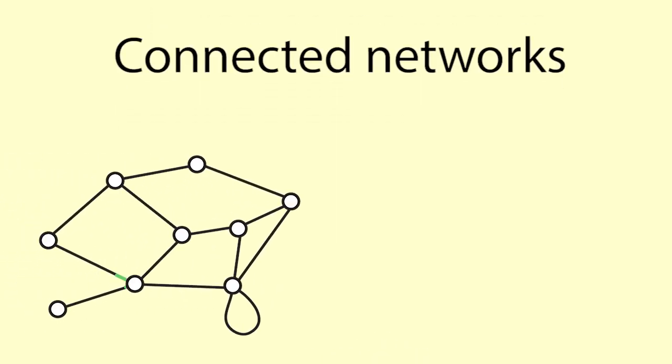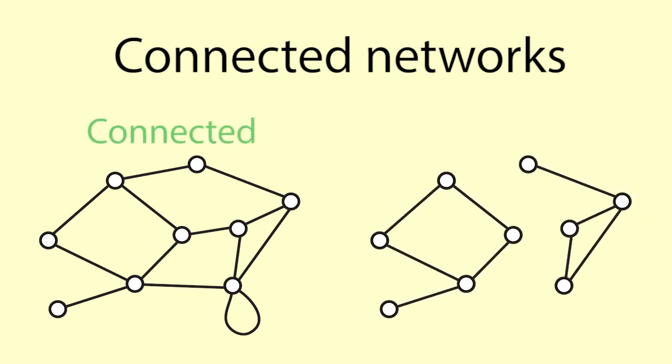Connected networks. A network is connected if every node can be reached from every other node by travelling the arcs. The direction of arcs is ignored if we are trying to determine if the network is connected.